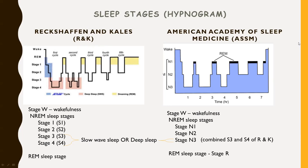Earlier, there was another classification called RK — Rechtschaffen and Kales. Both AASM and RK are similar, but the major difference in grossly classifying sleep is that S3 and S4 (the deep sleep states) in RK have been combined as a single stage, Stage N3, in the AASM criteria.